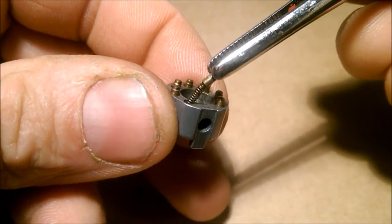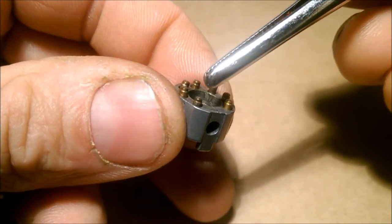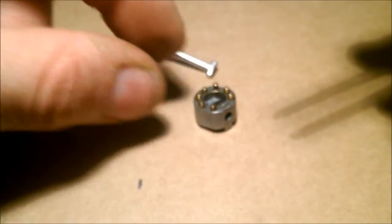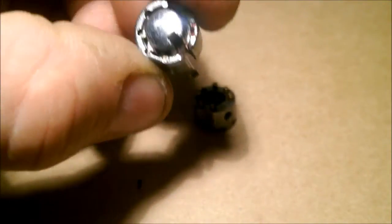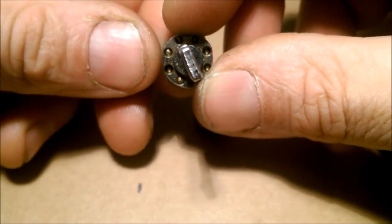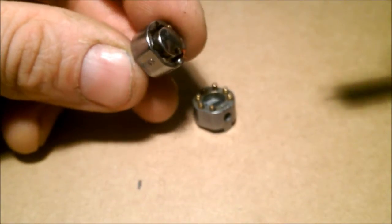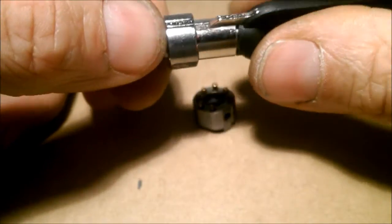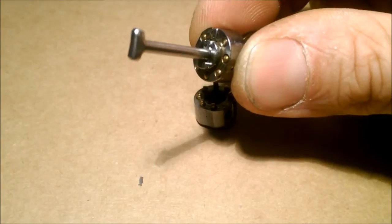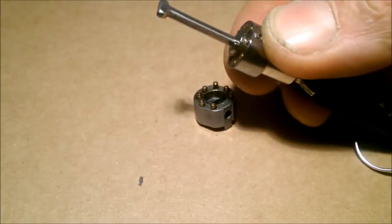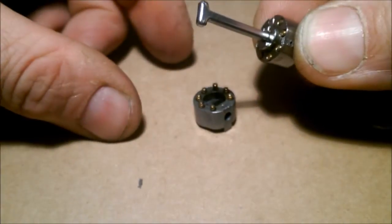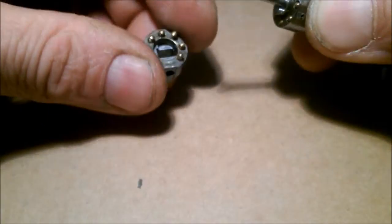Here we have one spring. This is the lower part, and here is the key part with the pins. I'll take a key. If I stick in the key, you see that they all now have the same height. So if the correct key is inserted, the shear line is free and you can turn the core. I will reassemble it now.